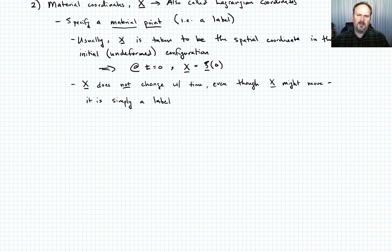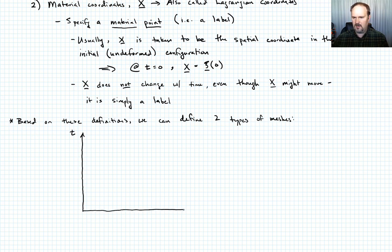So based on these definitions, we can define two types of meshes. Let me draw our diagram for how I want to describe these. This will be our time axis. And since this is a lecture on 1D, I'm just going to show you this in 1D. So this point here will be our spatial position, xi. And then I'm going to have a mesh, which means that I'm going to have nodes. I'm going to denote the nodes with, let's say, circles here.